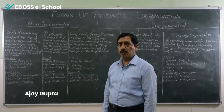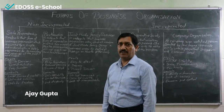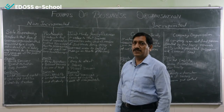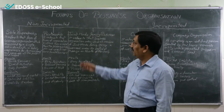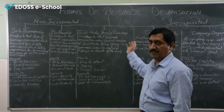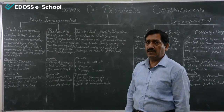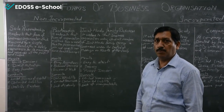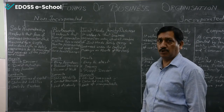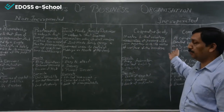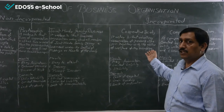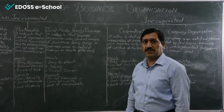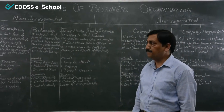I am Ajay Gupta and today I am going to teach you Chapter 2 of Class 11, that is Forms of Business Organization. According to the forms of business organization, there are two parts: non-incorporated and incorporated. Under non-incorporated there are three organizations: sole proprietorship, partnership, and joint Hindu family business. Under incorporated there are two parts: cooperative society and joint stock company.